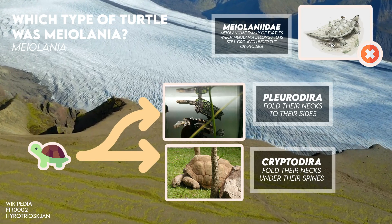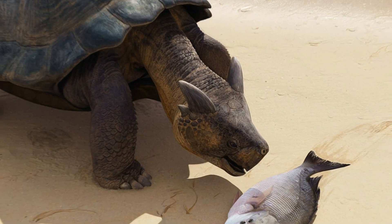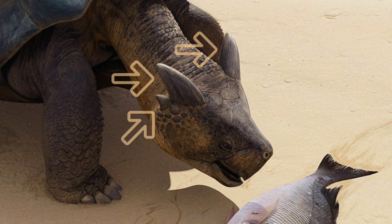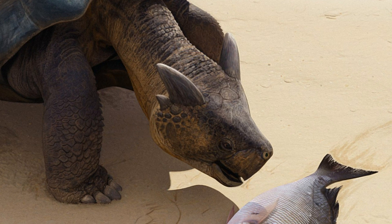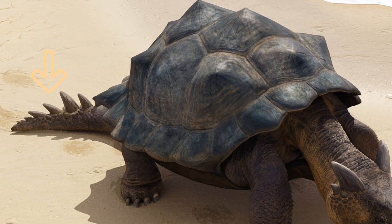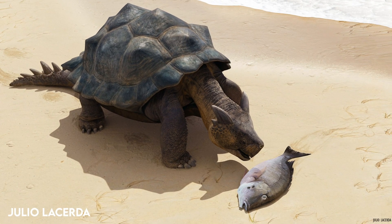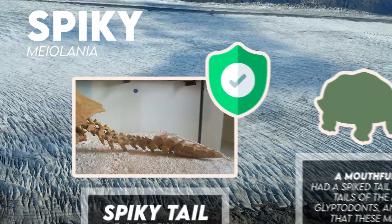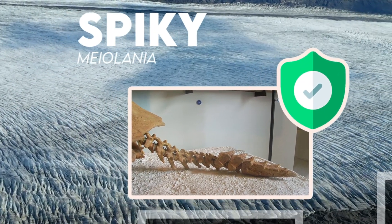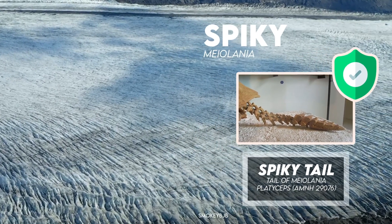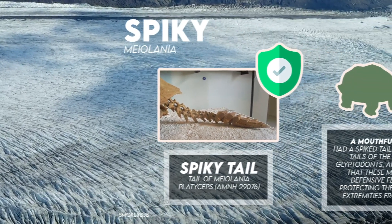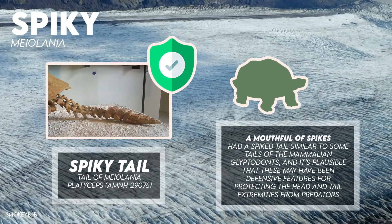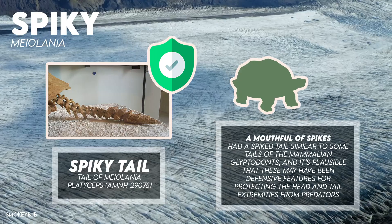Myolania had an unusually shaped skull that sported many horn-like and knob-like protrusions. Two large horns faced sideways and would have prevented the animal from fully withdrawing its head into its shell. The tail was protected by armored rings and sported thorn-like spikes at the end. The body form of Myolania converges towards those of dinosaurian ankylosaurs and xenarthran glyptodonts. Aside from the large spikes on its head, Myolania also had a spiked tail similar to some mammalian glyptodonts, and it's possible that these may have been defensive features, making it hard for predators to close their mouths around these spots without getting a mouthful of spikes.